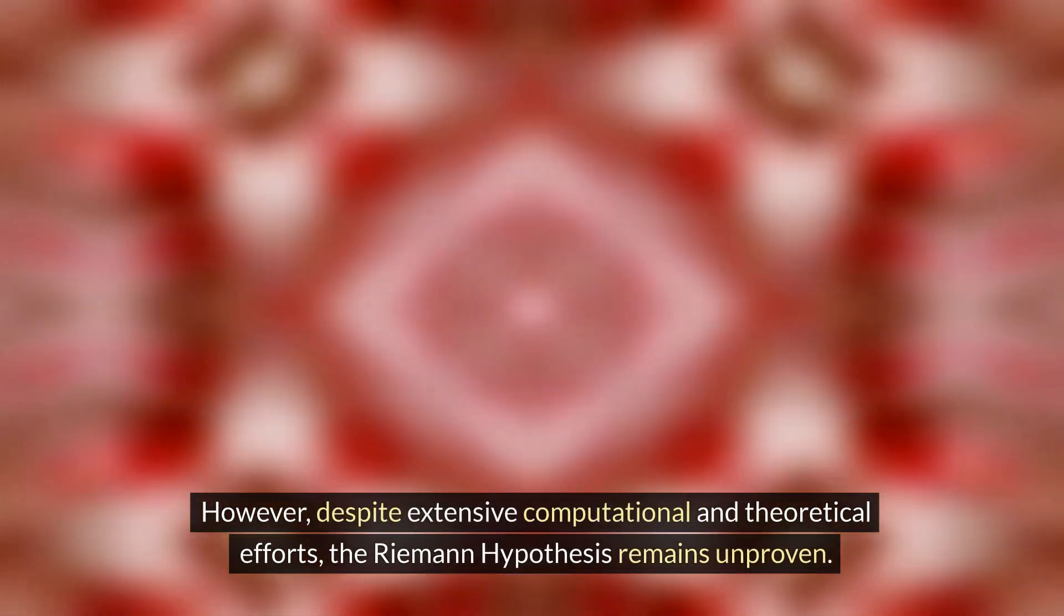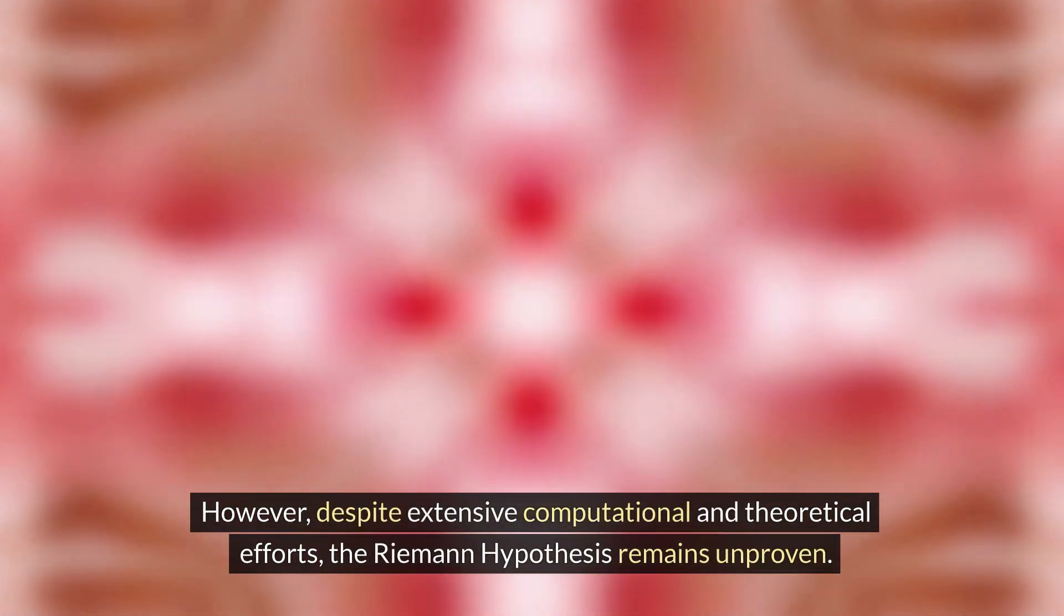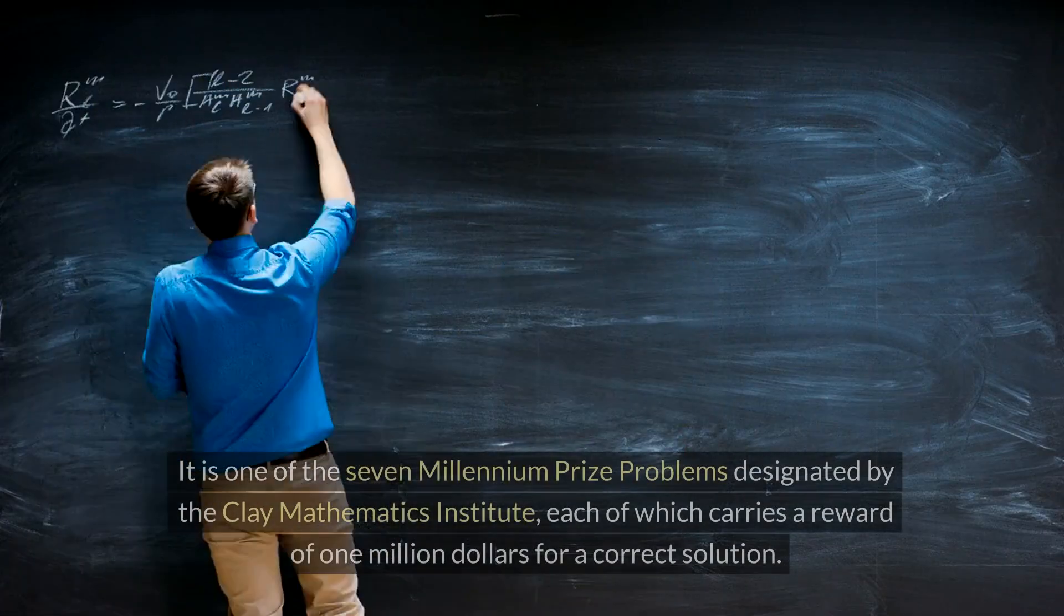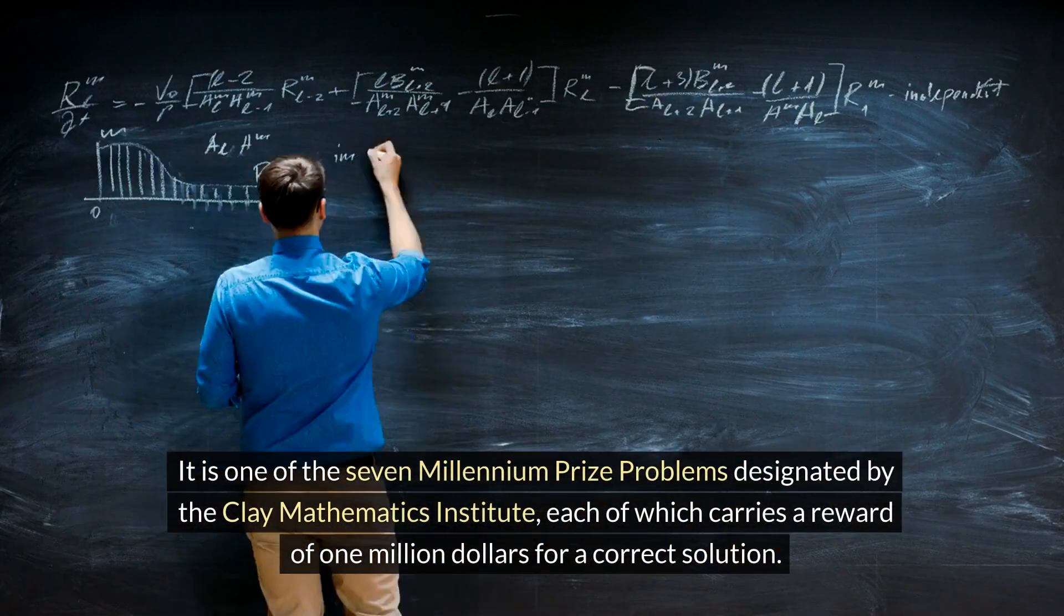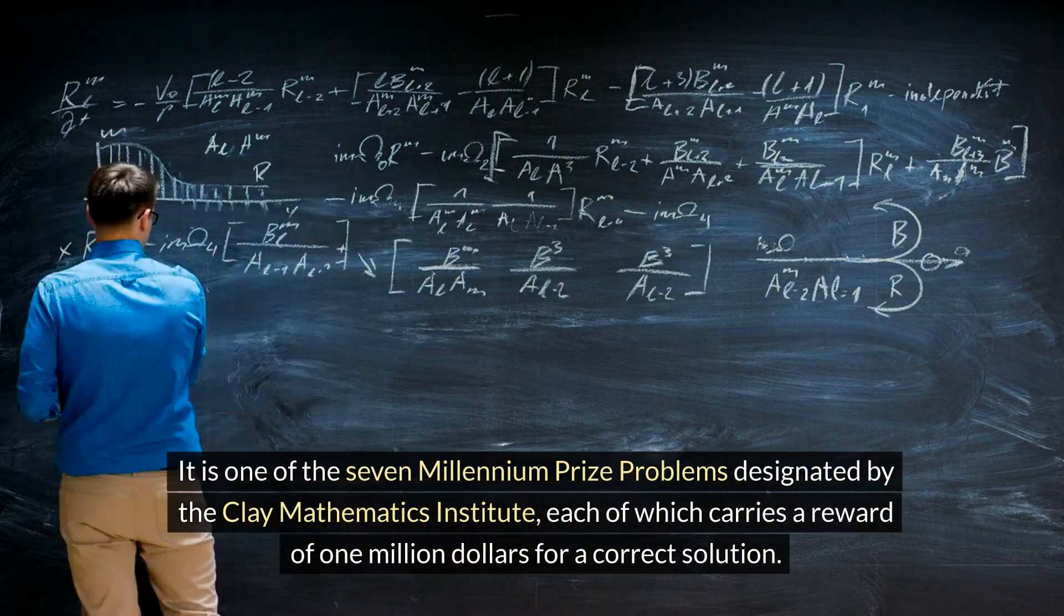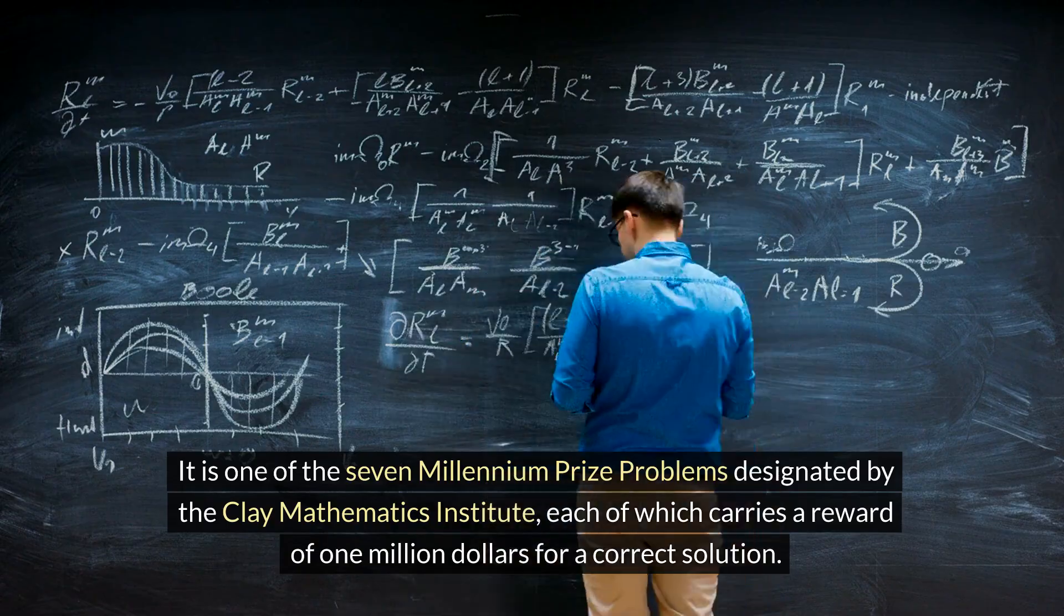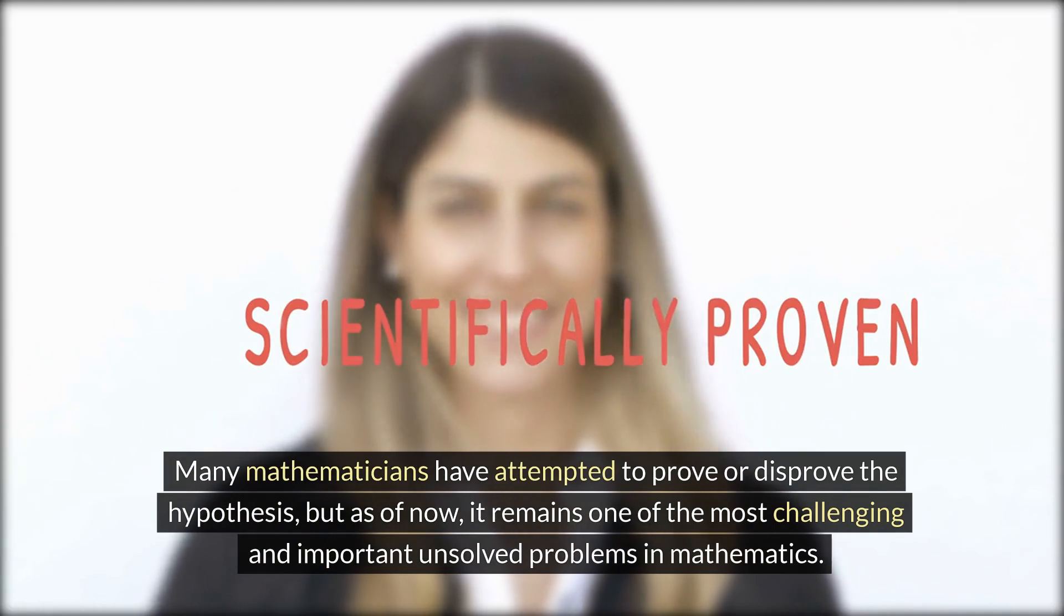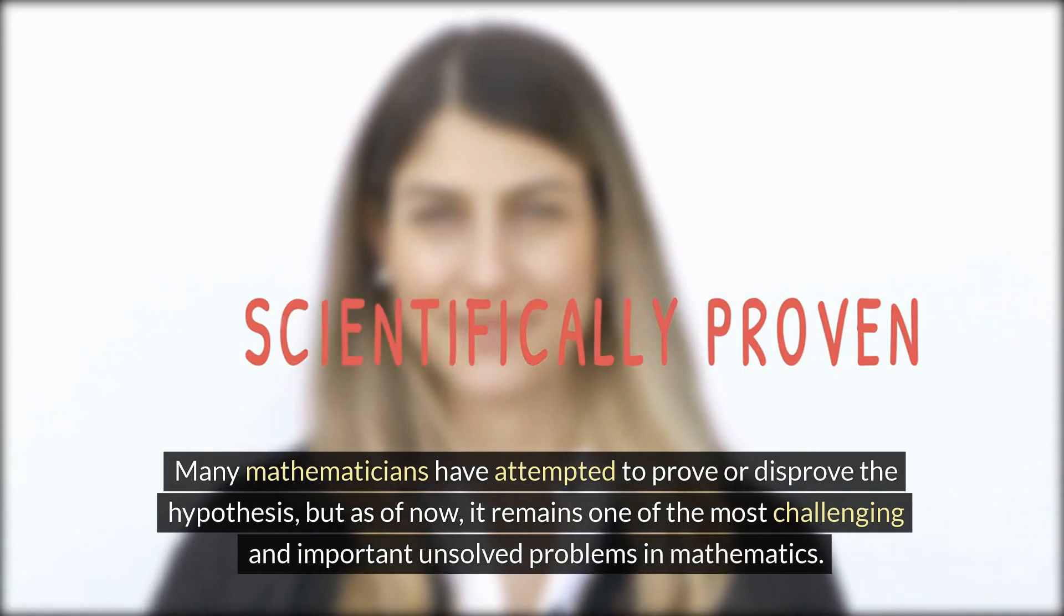However, despite extensive computational and theoretical efforts, the Riemann hypothesis remains unproven. It is one of the seven Millennium Prize problems designated by the Clay Mathematics Institute, each of which carries a reward of $1 million for a correct solution. Many mathematicians have attempted to prove or disprove the hypothesis, but as of now, it remains one of the most challenging and important unsolved problems in mathematics.